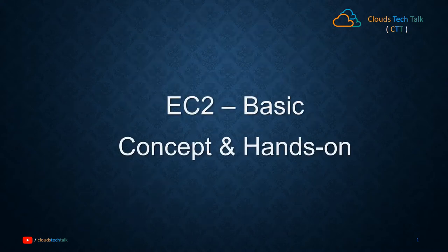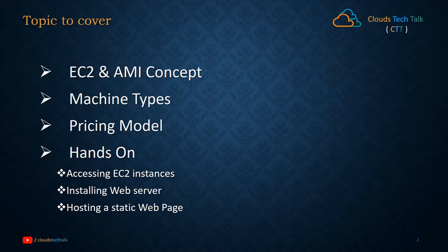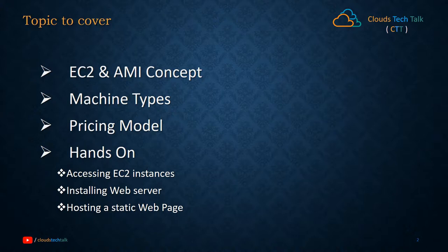Hello friends, today we will discuss Amazon EC2 instances and how we can create a virtual server on Amazon cloud. I will create another video about advanced configuration and advanced concepts of EC2. In this video we are going to discuss EC2 concepts, explain what is AMI (Amazon Machine Image), discuss machine types and pricing models. We will also do some hands-on: accessing an EC2 instance, installing a web server, and hosting a static web page accessible from the internet.